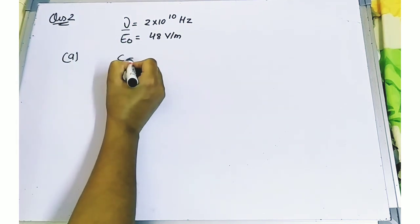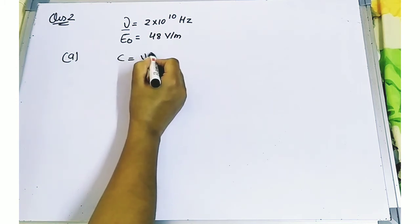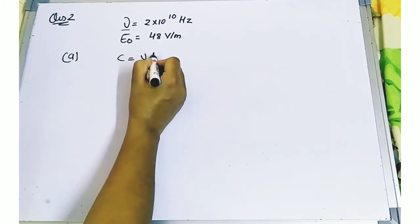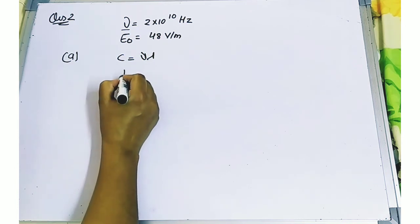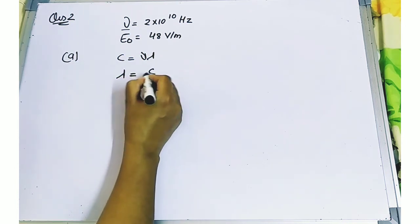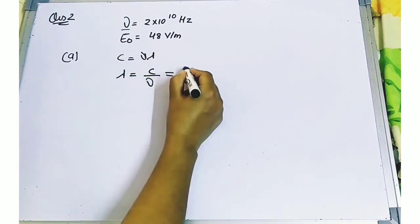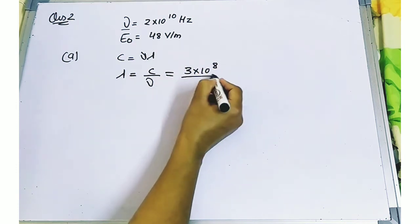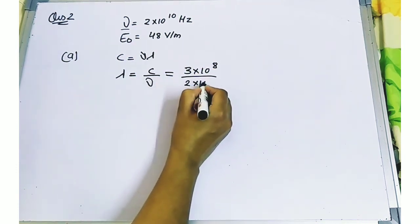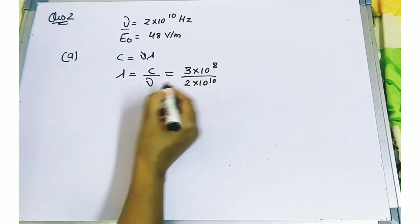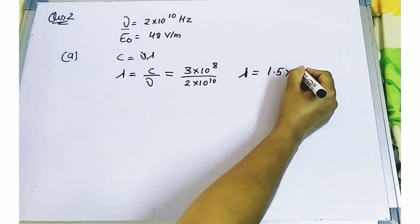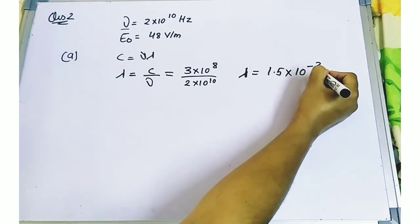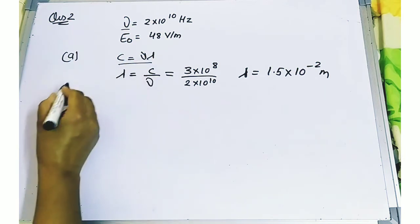For the wavelength, we use c equals frequency times lambda. So lambda equals c upon f, which is 3 × 10⁸ divided by 2 × 10¹⁰, giving lambda equals 1.5 × 10⁻² meters.